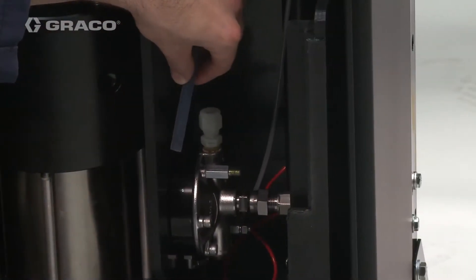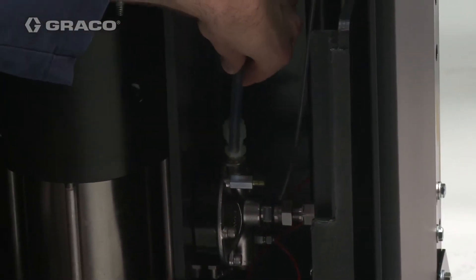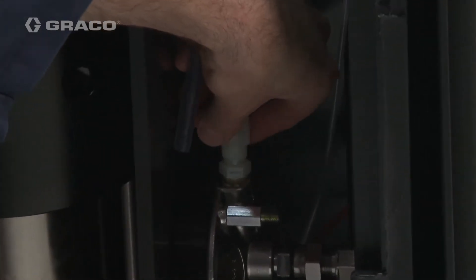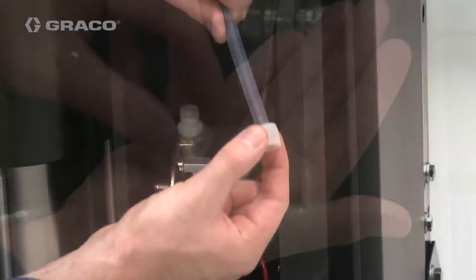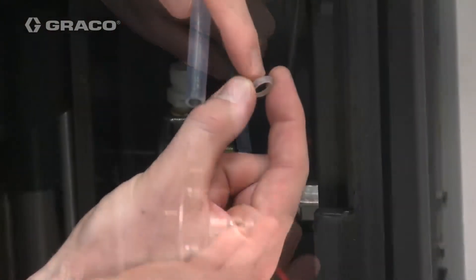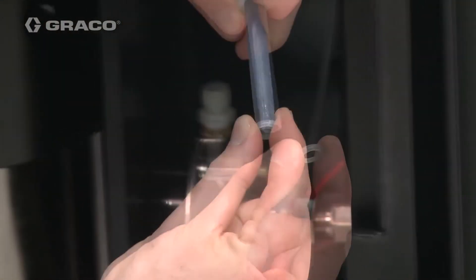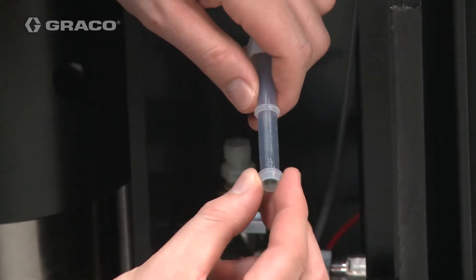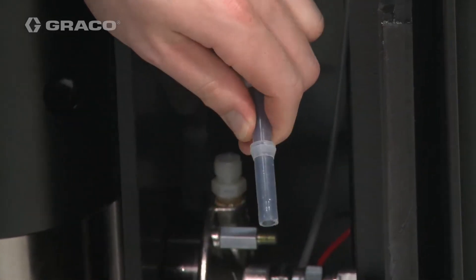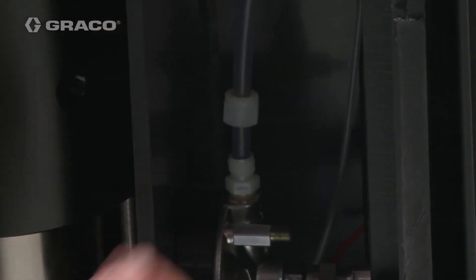Locate the tube compression fitting on the fluid regulator. Unscrew the nut portion of the fitting. Slide the nut onto the fluid hose followed by the front ferrule, then the back ferrule. The wider side of each ferrule faces the nut.